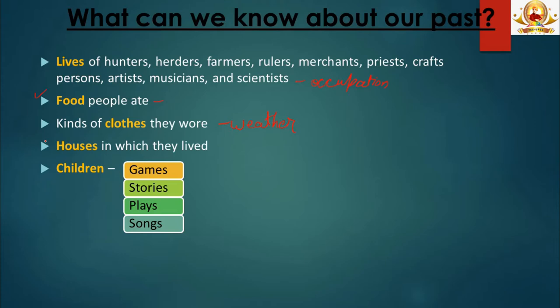We get to know about the houses in which people used to live. When we study houses, we learn about the materials used, where those materials came from, and what method or technique was used to build them. History also tells us about games children used to play, the stories they heard, plays they performed, and songs they sang. All these things help us understand how our society has evolved and what changes have taken place over time.